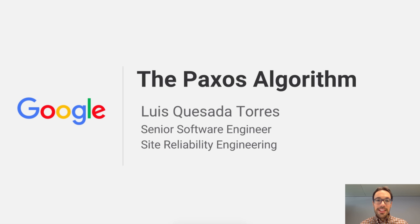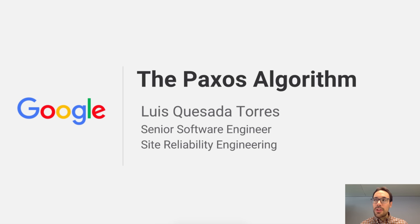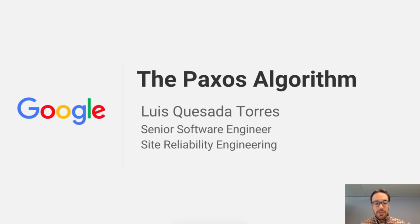Hello, my name is Luis Quezada-Torres. I work as Site Reliability Engineer at Google. As Site Reliability Engineers, we often work on large-scale systems, some of which rely on algorithms to reach consensus, so that changes to a certain entity are eventually perceived by the distributed fleet in a certain order consistently. One of these algorithms is the Paxos algorithm, which is what I'm going to talk about today.